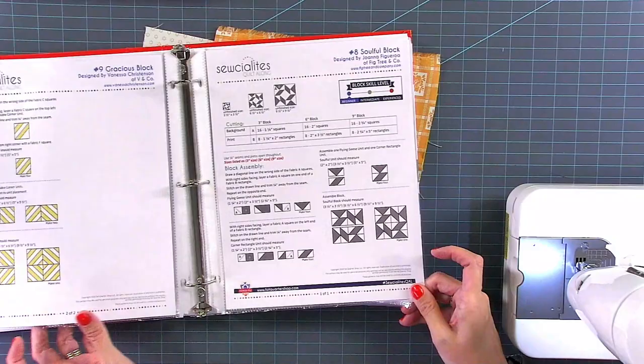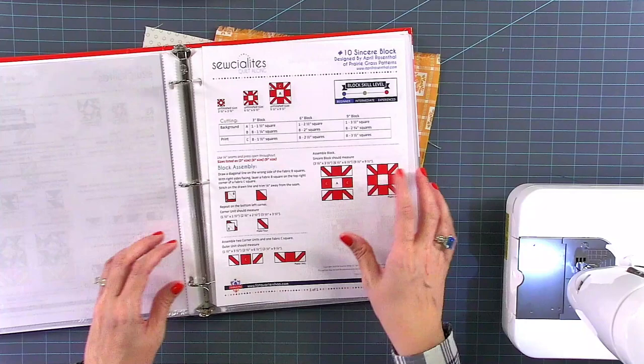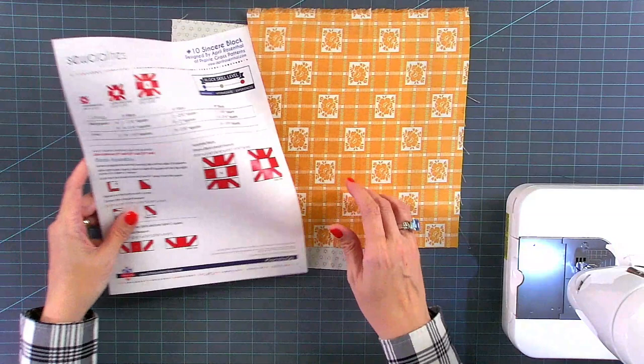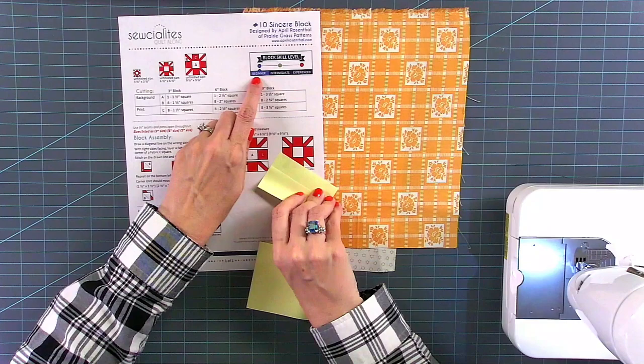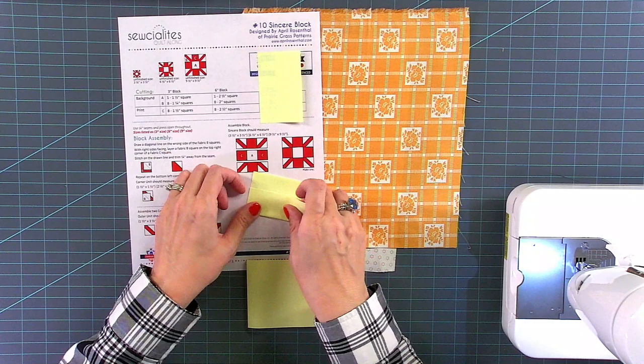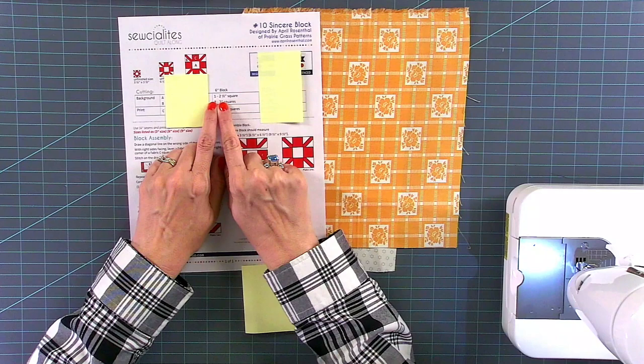So, we are on block 10. It's one page, super easy. I just put some page protectors in from Office Depot. On this one, we're going to make the six-inch size. I will cover up the three-inch and nine-inch instructions so that I don't miscut. This is beginner level. Each of our patterns say beginner, intermediate, or experienced. Those are obviously subjective.